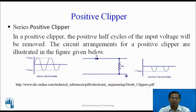Let us see how it works. During positive half cycle, diode D is reverse biased — it acts as an open, therefore the circuit is incomplete. So the current is zero, therefore load voltage is zero. During negative half cycle, diode D is forward biased, it acts as a closed circuit, therefore current flows in the anticlockwise direction, so the negative half cycle is developed across the load. In this circuit, the positive half cycle is removed from the supply — that is why the name is the series positive clipper.